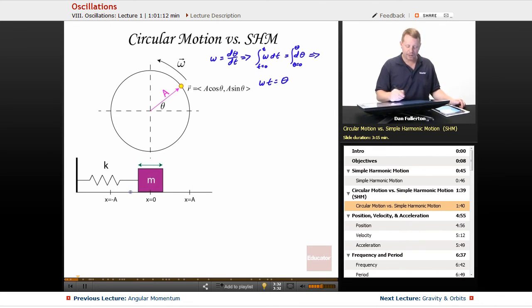And if we go down and we want to analyze our spring block system, we could look at it from the perspective of Newton's law, f equals ma, and that force is a restoring force minus kx. But we also know that acceleration is the second derivative of x with respect to t squared. So this means that m d squared x dt squared equals minus kx.